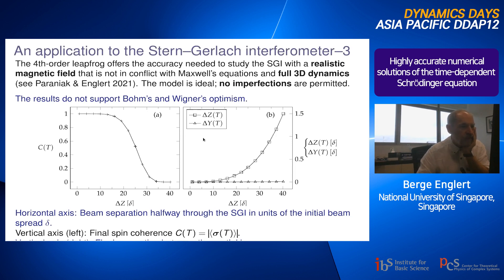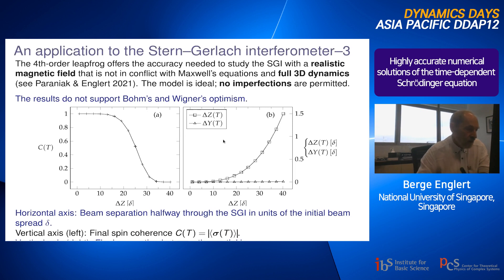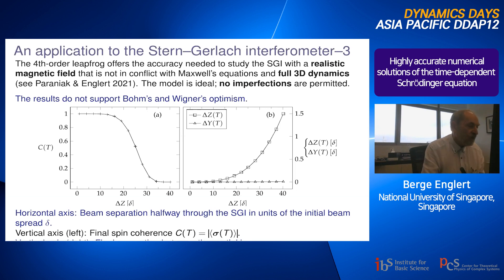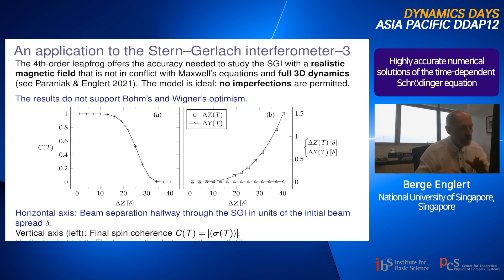We cannot avoid some spatial separation in certain directions due to the three components of the magnetic field — this is already the best possible case. The conclusion is: when the first Stern-Gerlach apparatus splits the beam noticeably, spin coherence cannot be recovered. Quantum evolution is not reversible in this sense, contrary to what Bohm and Wigner claim — that as long as you haven't detected the atom you can undo everything that has happened. That is not true.